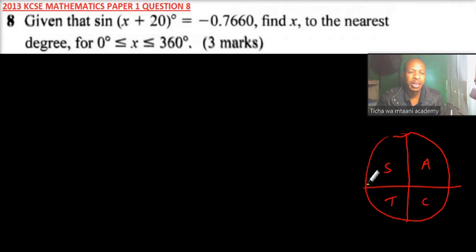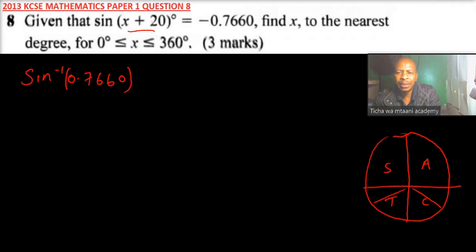And for the fourth quadrant, only cosine is positive. So it means this angle lies in this quadrant and in this quadrant because it is negative. The first thing we need to do is to find what is the sine inverse of 0.7660 so that we'll be able to get these angles in the third and fourth quadrant. This angle here will give us 49.99 degrees. So we say it is 50 degrees to the nearest degree.